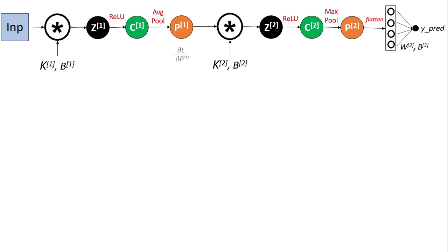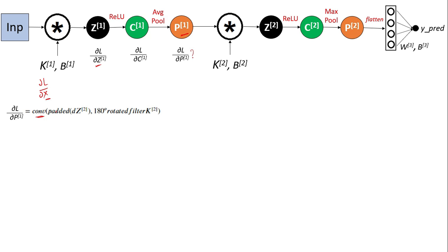Now we move to the first layer. We need to find del L by del P1, then del L by del C1, then del L by del Z1, and once we have del L by del Z1 we can obtain del L by del K1 and del L by del B1. The question is: how do we get del L by del P1? In Part 1 I derived del L by del X where X was the input — here P1 is the input, so del L by del P1 is the same as that del L by del X, which was the convolution of the padded dZ term with the 180-degree rotated filter K2.